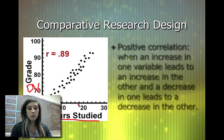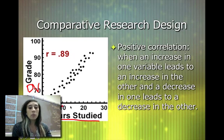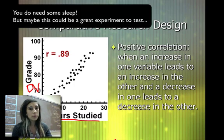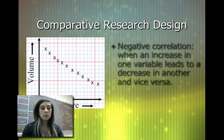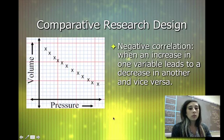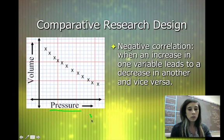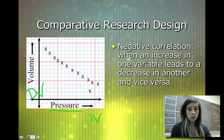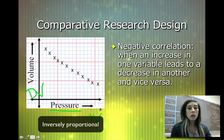According to this graph, we see a positive correlation — the more hours you study, the higher your grade. A negative correlation goes in the opposite direction. For example, with pressure as the independent variable and volume as the dependent variable: as pressure increases, volume decreases. That's a negative correlation — they are inversely proportional, so as one goes in one direction, the other goes in the opposite direction.